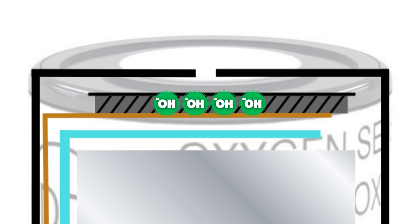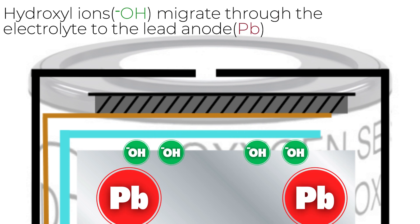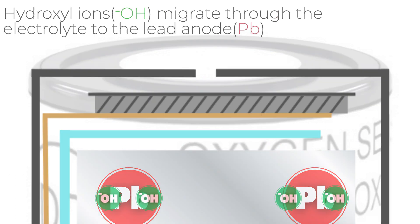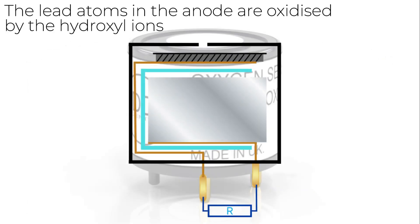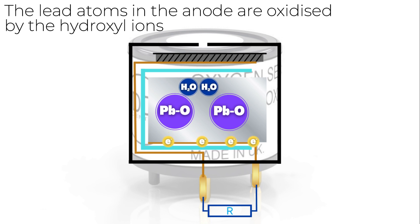We will see later in the video where these electrons are coming from. The hydroxyl ions migrate through the electrolyte down to the lead anode. The lead atoms in the anode are oxidized by the hydroxyl ions to form lead oxide, and this chemical reaction generates electrons and liquid water molecules.